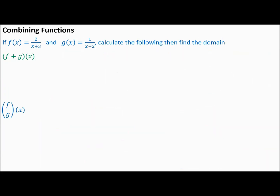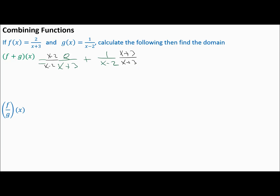Now with two new functions: F of X is 2 over (x plus 3) and G of X is 1 over (x minus 2). These are rational functions, not polynomials. To add them, we need a common denominator of (x plus 3)(x minus 2). Multiply the first fraction by (x minus 2)/(x minus 2) and the second by (x plus 3)/(x plus 3).